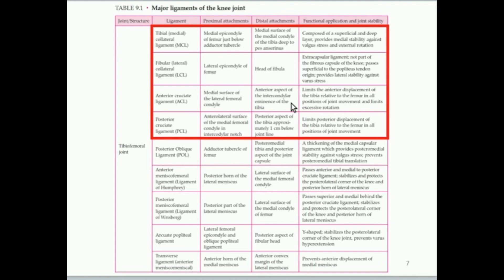We're going to conclude this video with a couple of short clips demonstrating an ACL tear — a little bit graphic, but it helps to actually see what's happening. After that, we will go to the next video, which covers muscle contractions of the knee joint — the quadricep muscles, the hamstring muscles, and the various motions the knee joint allows. Make sure to join us in that video. Good luck this week — thank you.